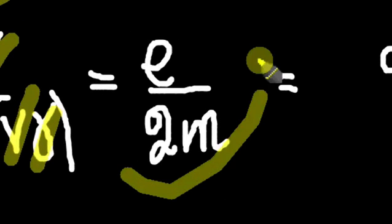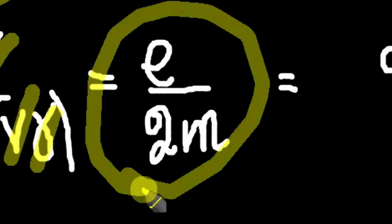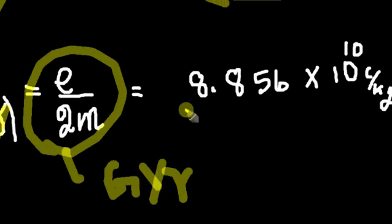It's called as gyromagnetic ratio. Some of the exams conducted by governments ask these type of questions. What is the value of gyromagnetic ratio? So, I am just letting you know that gyromagnetic ratio is equal to 8.856 into 10 raised to 10 coulomb per kg. That is, the ratio of the magnetic moment versus the angular momentum of an electron.